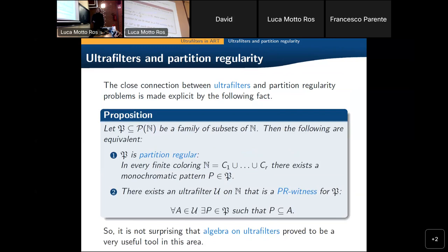This is the basic property that tells us that ultrafilters and partition regularity problems are closely connected. A family is partition regular if and only if one can find an ultrafilter that is a witness of this property — witness meaning that any member of the filter includes one of the patterns we are talking about. For instance, the partition regularity of arithmetic progressions of length 100 is witnessed by an ultrafilter with the property that any member of the filter contains a 100-term arithmetic progression.